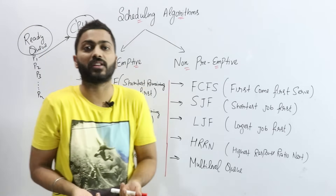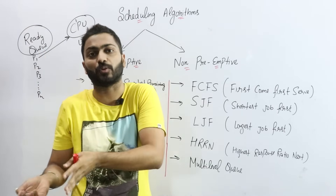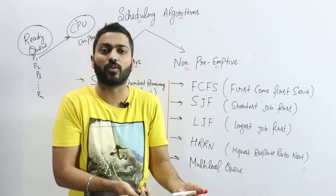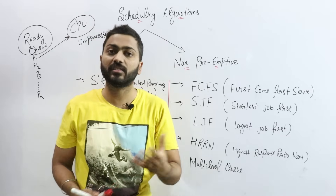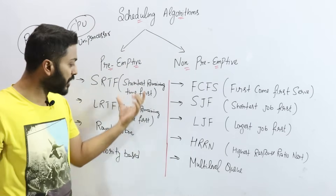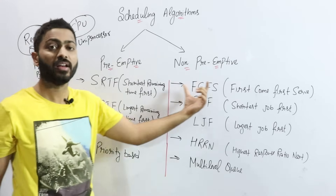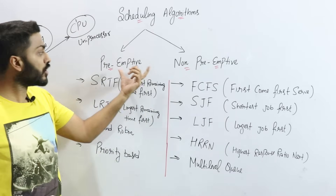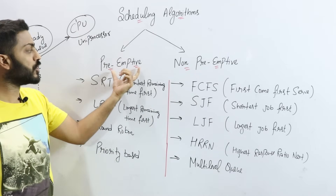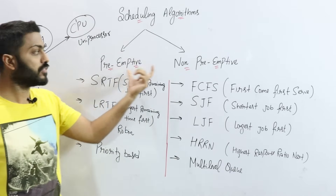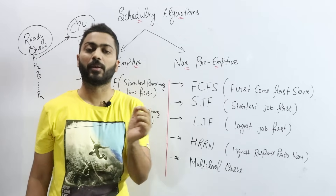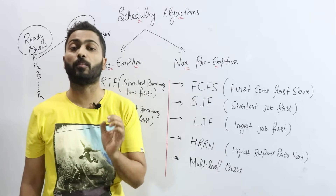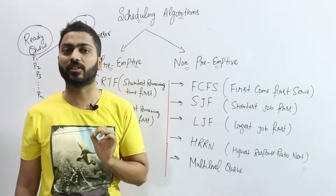The scheduling algorithm helps decide what process to execute and for how long. Broadly, there are two types: preemptive and non-preemptive. These terms are fundamental to scheduling algorithms.